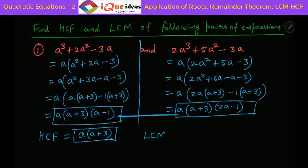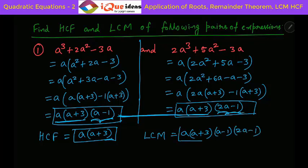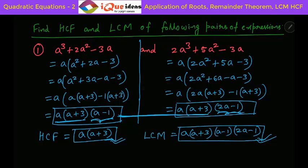And the LCM — whatever is common in both appears only once in LCM. So A is common, it appears once. A plus 3 is common, it appears once. Then whatever remains — A minus 1 will also be part of LCM and 2A minus 1 will also be part of LCM. So the LCM is A into A plus 3 into A minus 1 into 2A minus 1, whereas the HCF was just A into A plus 3.